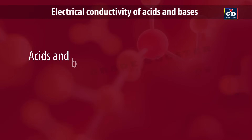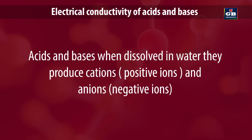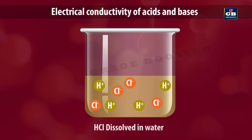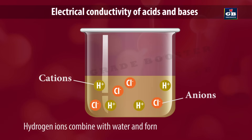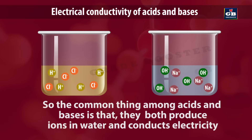Do you know why? Acids and bases, when dissolved in water, produce cations (positive ions) and anions (negative ions). When HCl is dissolved in water, it produces H+ cations and Cl− anions. These hydrogen ions cannot exist alone — they exist in the form of hydronium ions. Similarly, dissolving sodium hydroxide in water forms Na+ cations and OH− anions. So the common thing among acids and bases is that they both produce ions in water and conduct electricity.